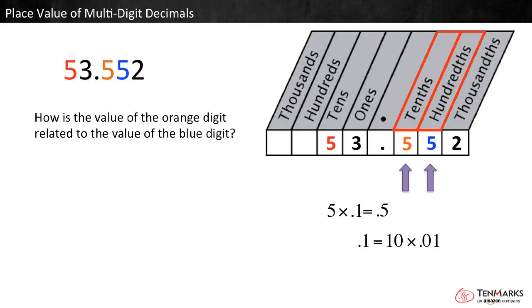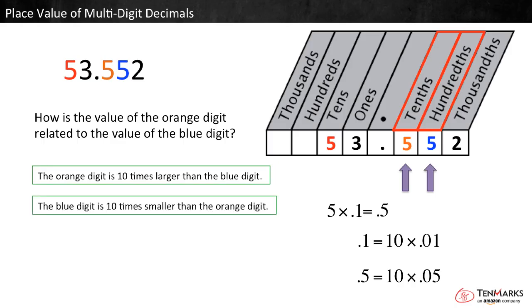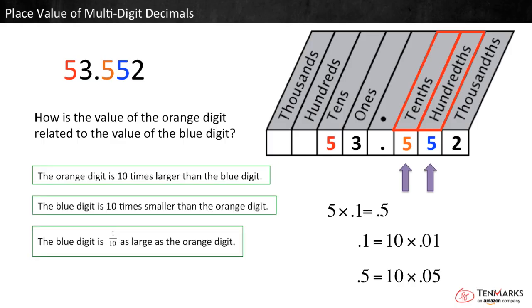Since each tenth is worth ten hundredths, five tenths is ten times as large as five hundredths. So the orange digit is ten times larger than the blue digit. We can also reverse the statement to say that the blue digit is ten times smaller than the orange digit, or the blue digit is one tenth as large as the orange digit.